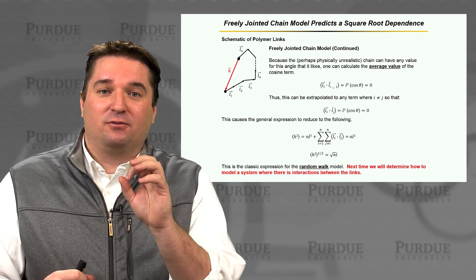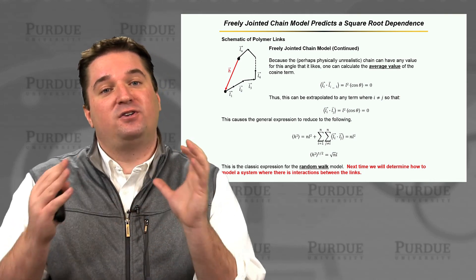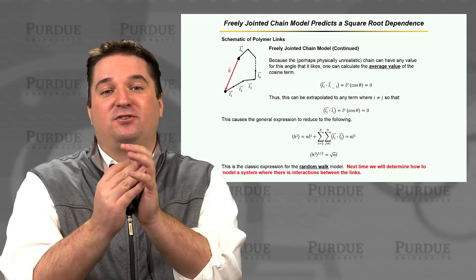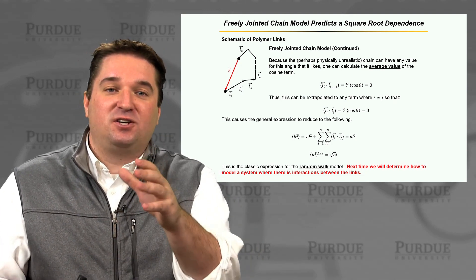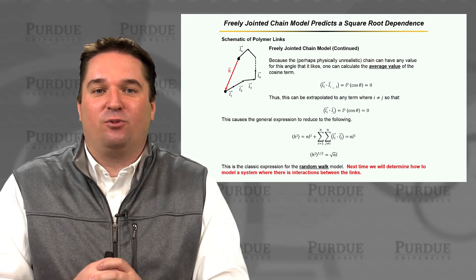Next time what we're going to do is take this to the next level, and we're going to think about a chain that's more physically realistic, and we're not going to allow the chain to fold back onto itself. We're going to let it have some kind of certain fixed amount of rotation it can have around that bond. I hope to see you next time on the NanoHub U course, the physics of electronic polymers, where we'll get even more into that issue.